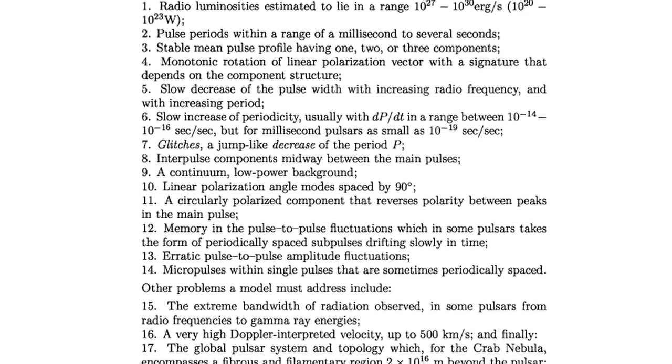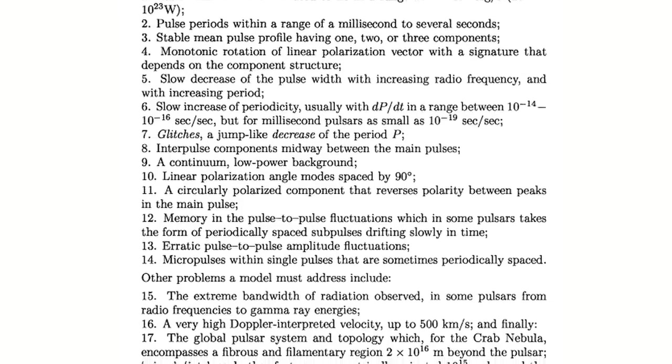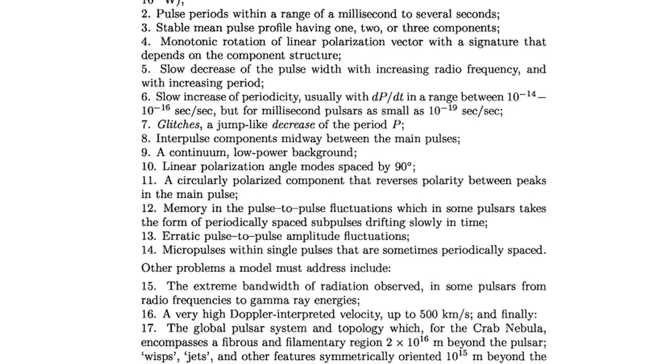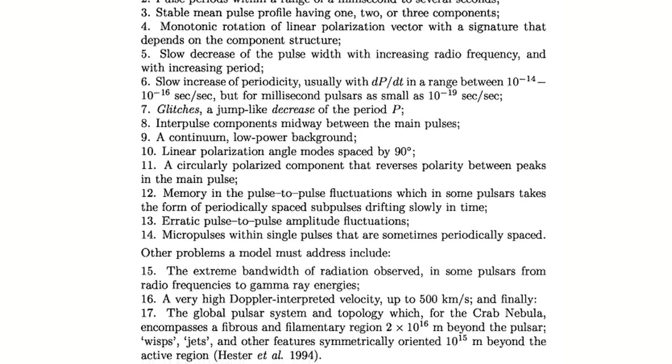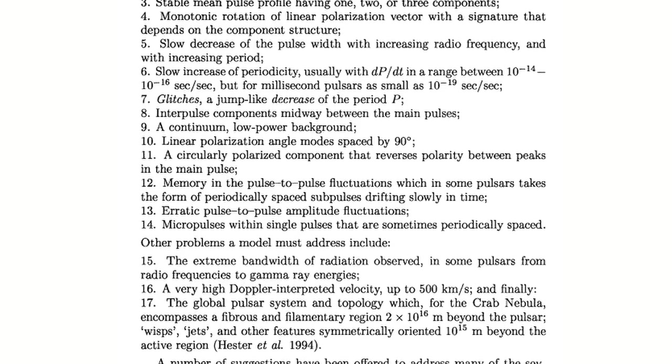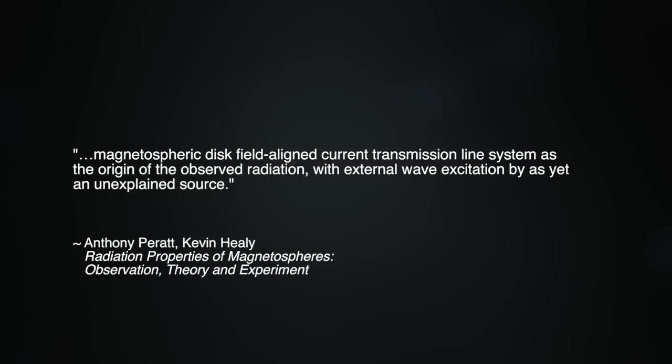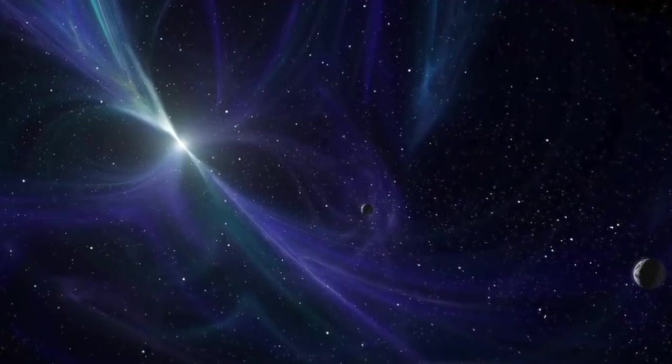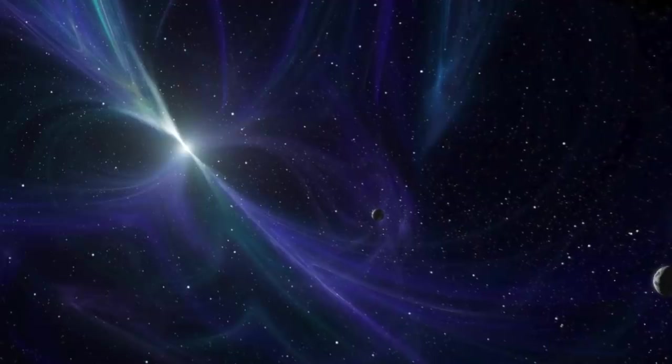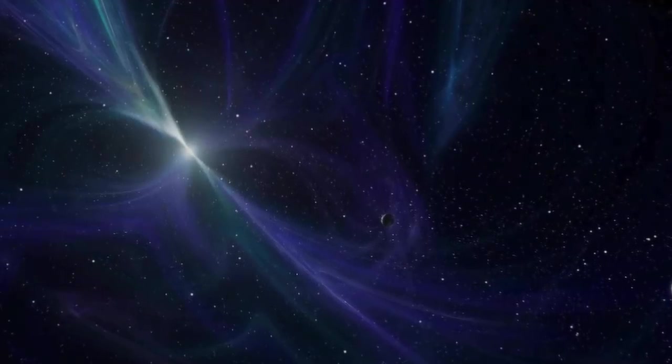They examined well over a dozen pulsar anomalies that the standard lighthouse model has failed to explain. Using electromagnetic particle and cell simulations, they proposed a magnetospheric disk field aligned current transmission line system as the origin of the observed radiation with external wave excitation by as yet an unexplained source. We asked Dr. Scott to explain some of the theoretical possibilities this research opens up.